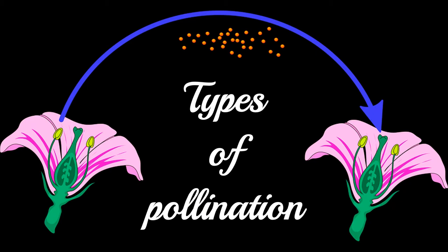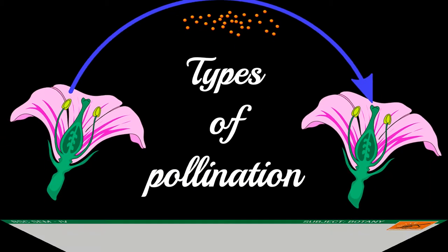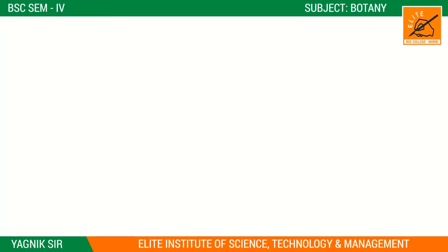The pollen is transported and transferred to the gynosium (stigma), where it lands and settles. This is what we call the pollination process — that is the core of what pollination is.